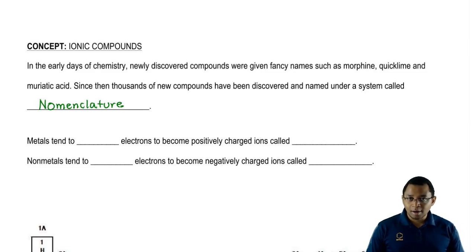Usually this positive ion, our cation, will be a metal. The negative ion, which is our anion, will be our nonmetal.